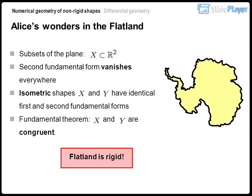Alice's wonders in the flatland: subsets of the plane have a second fundamental form that vanishes everywhere. Isometric shapes with identical first and second fundamental forms are congruent by the fundamental theorem. Therefore, flatland is rigid.